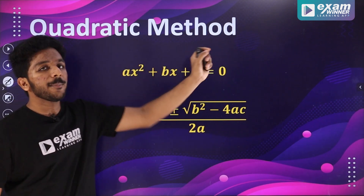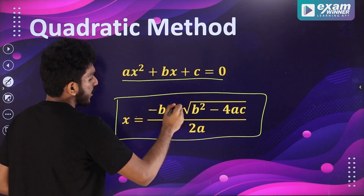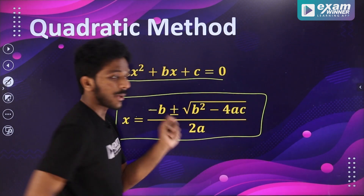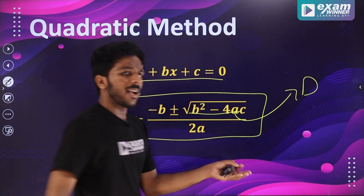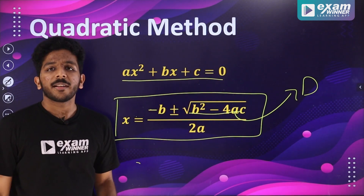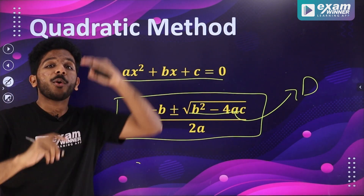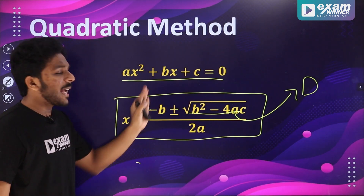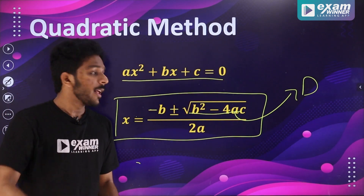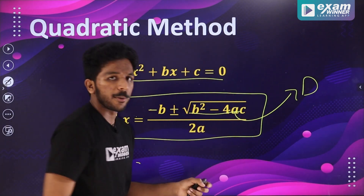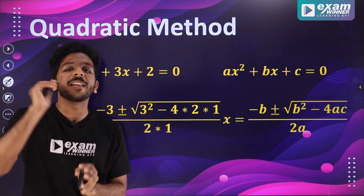Let's look at the next method: the quadratic formula. The formula is x equals minus b plus or minus root of b squared minus 4ac, divided by 2a. Here b squared minus 4ac is the discriminant. If the discriminant is negative, you have complex numbers. This is a very formal formula used in college-level mathematics.